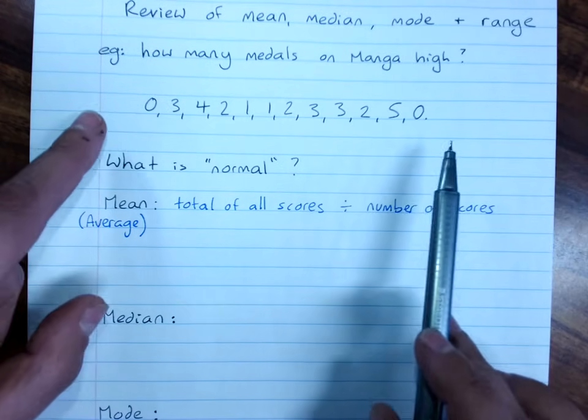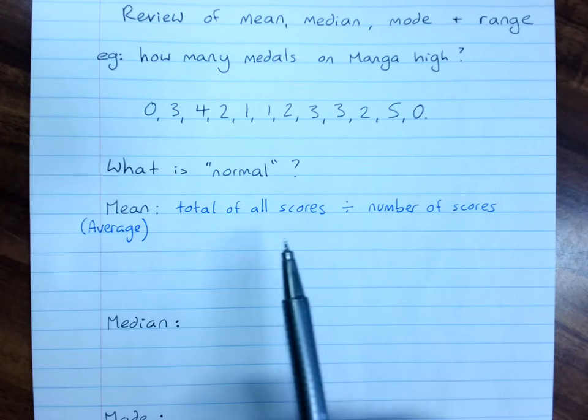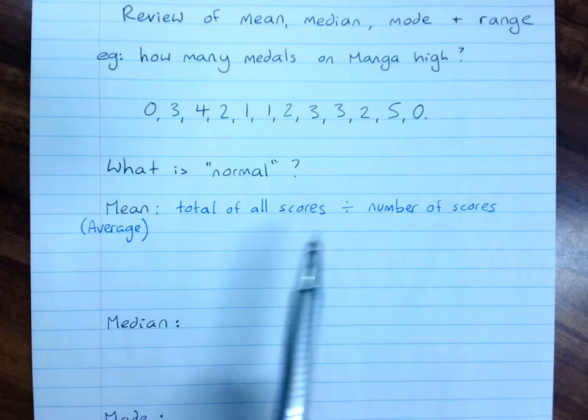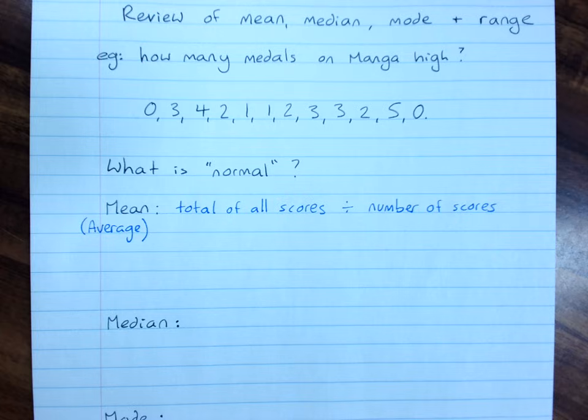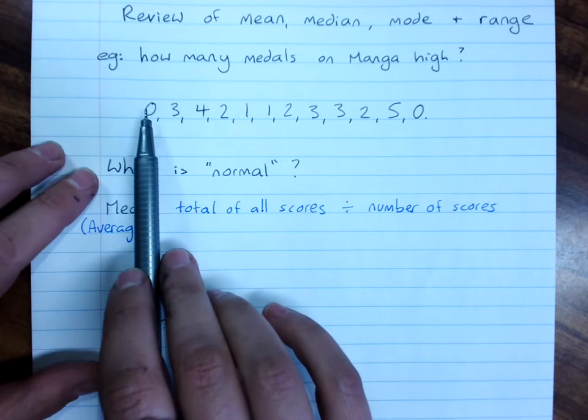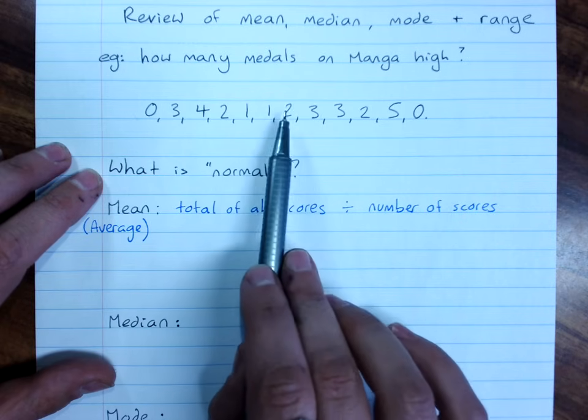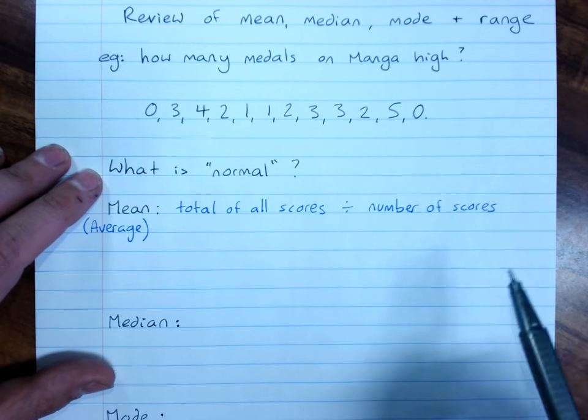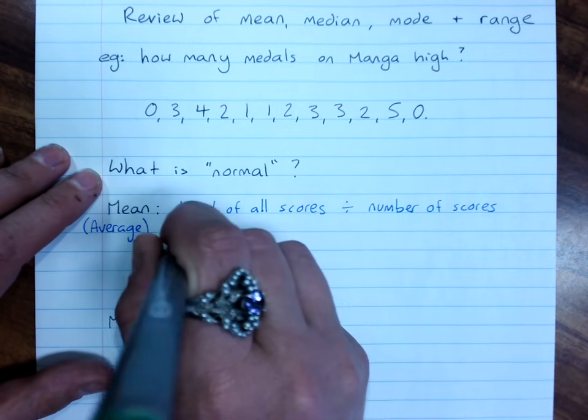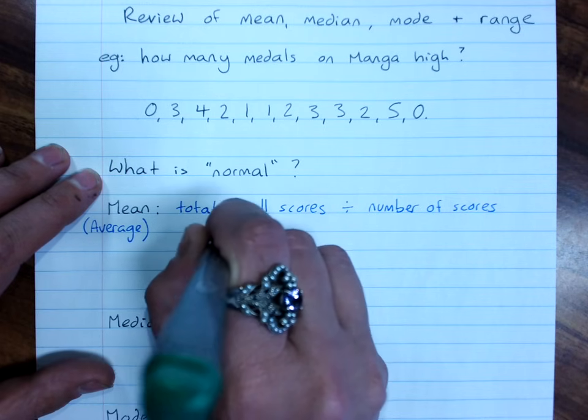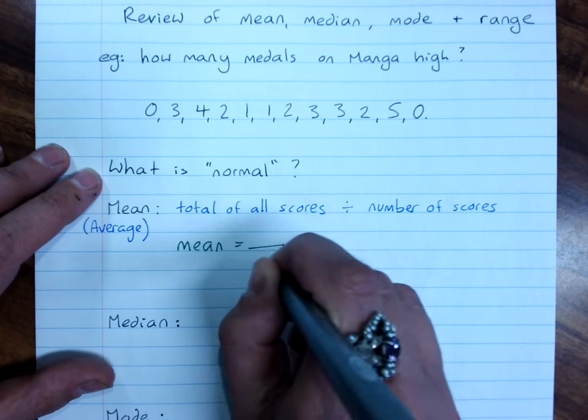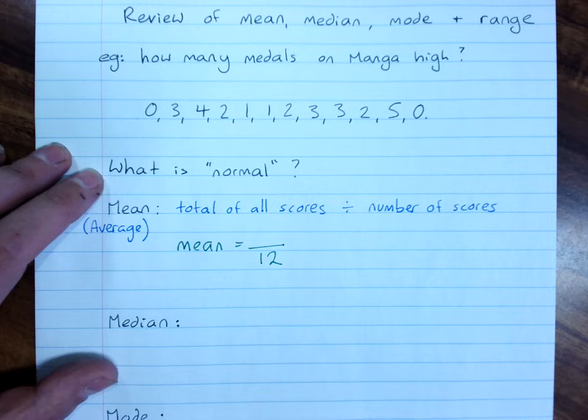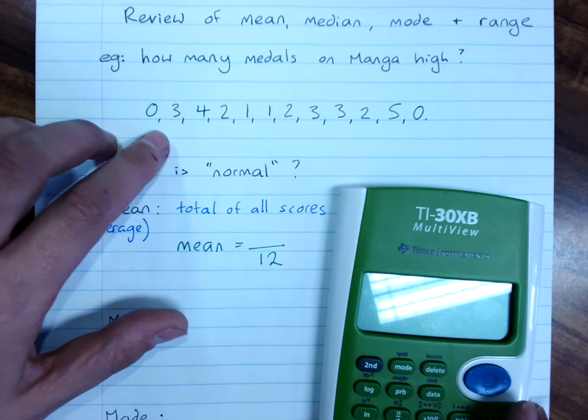And this is saying, look, let's add up all the scores and see how many each person would have got if we shared them out evenly. So we better count how many scores we have. So my mean will be whatever the total is divided by 12. And we better add that up.